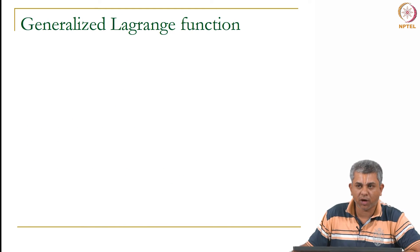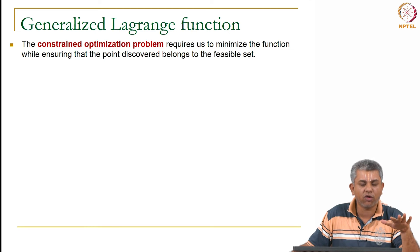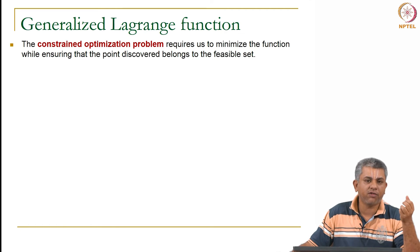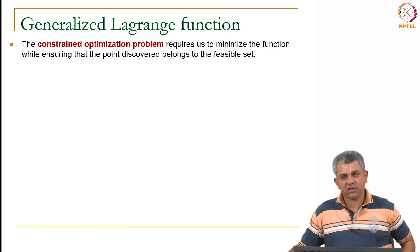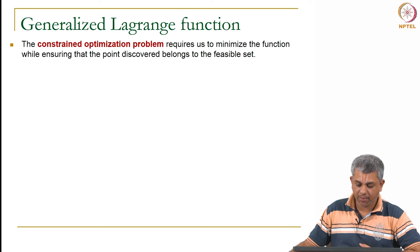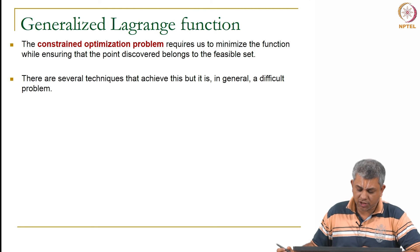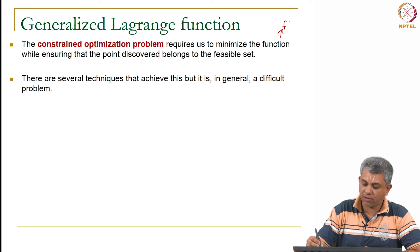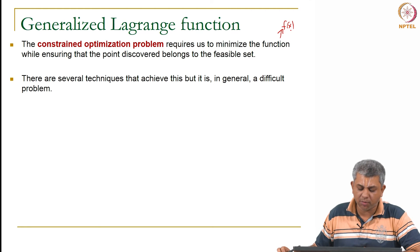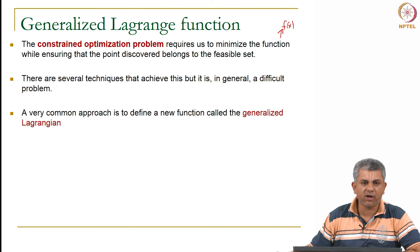Now how do we solve this problem? The expression I am going to write right now will look a little bit complicated, even if you are familiar with what is called Lagrange functions. But we will see this actually turns out to be a fairly simple function. We will see details of this in week 9 or 10. Remember that our constraint optimization problem wants us to minimize the function f(x) while ensuring that the point discovered belongs to the feasible set.